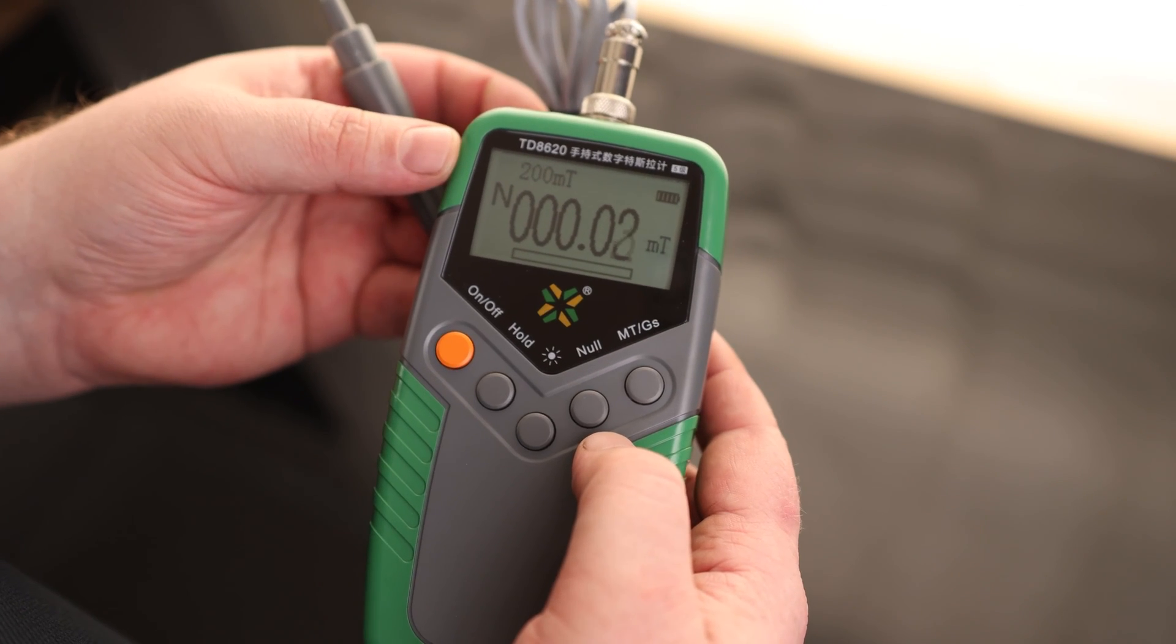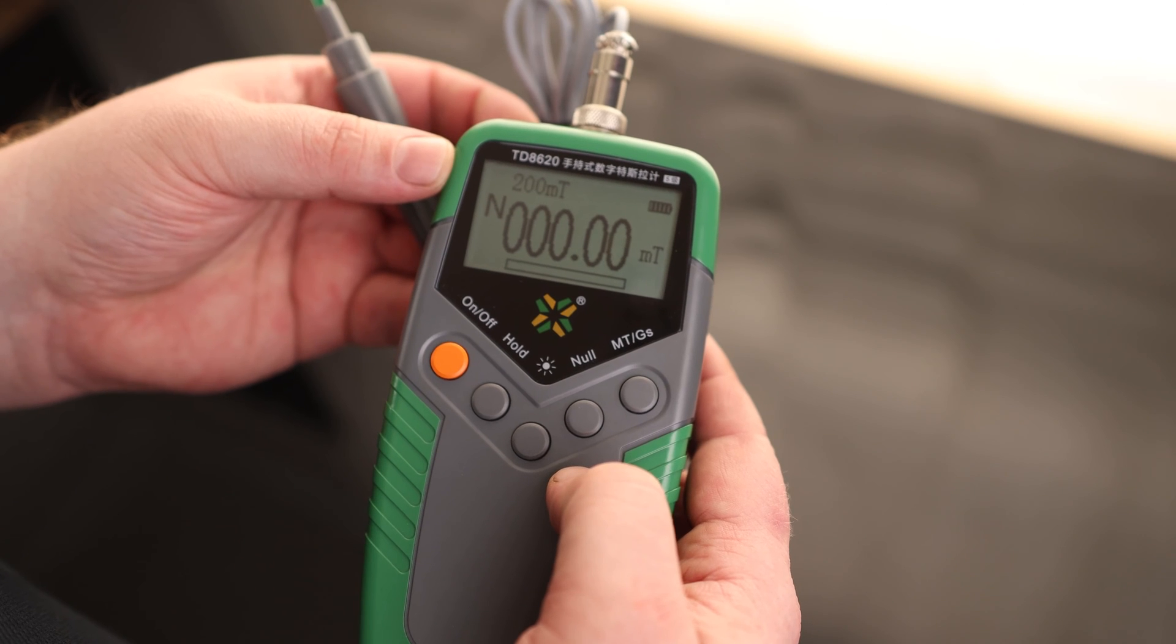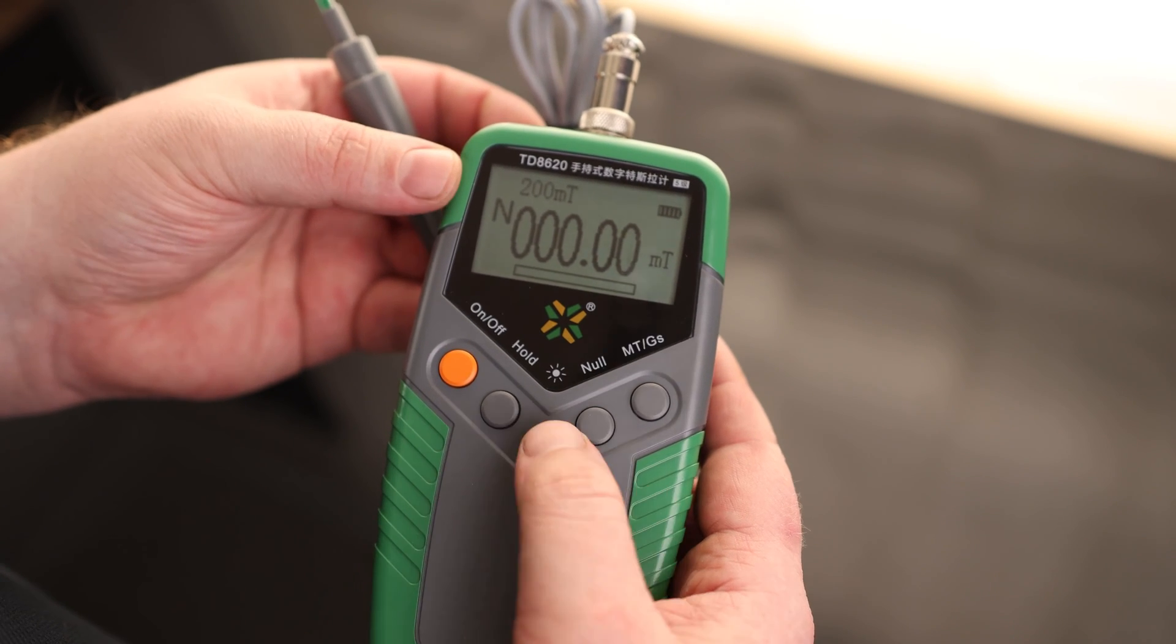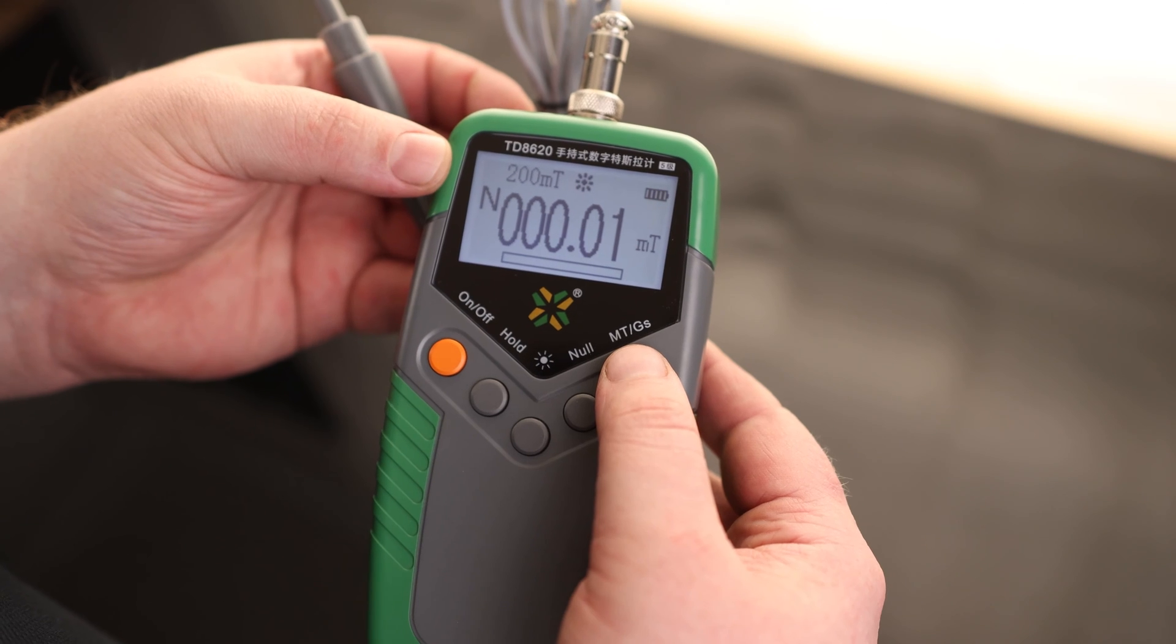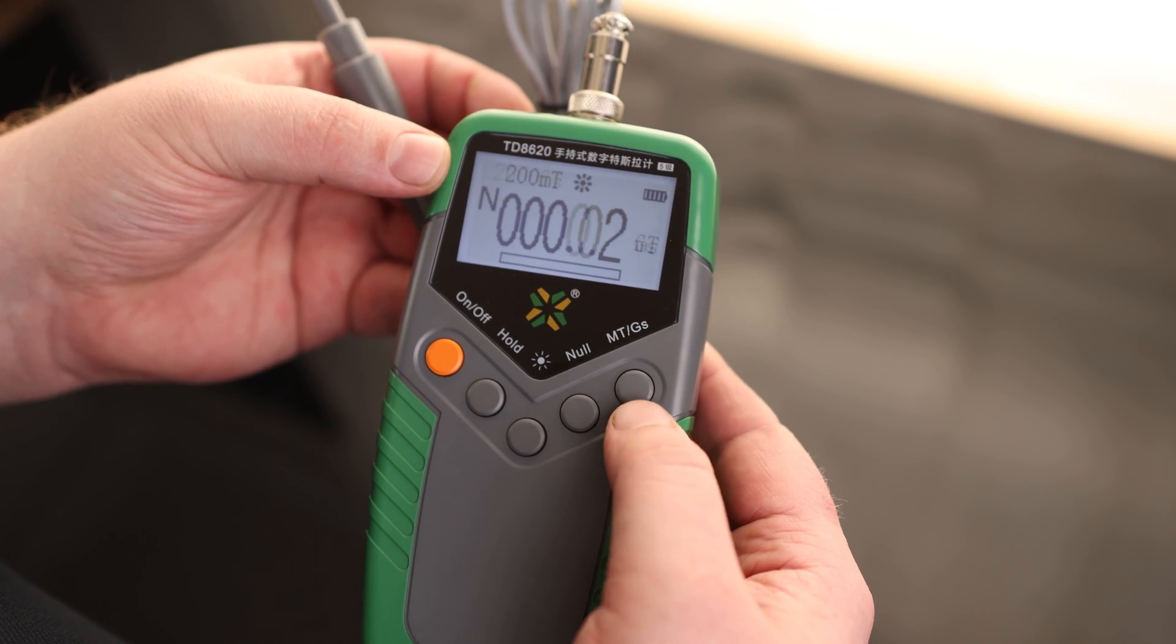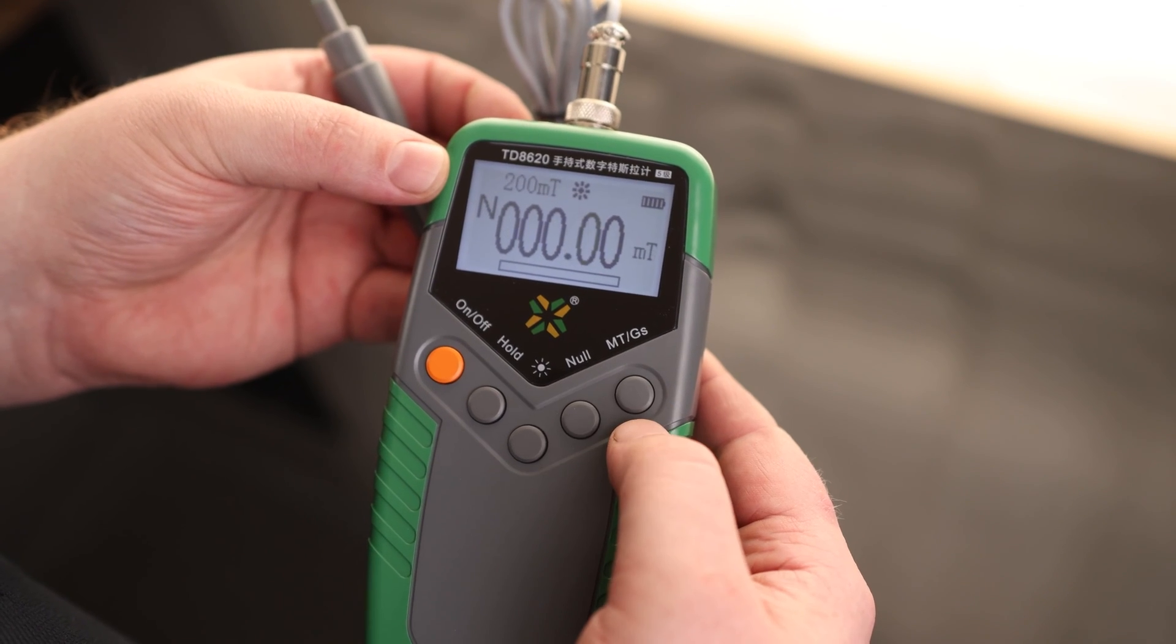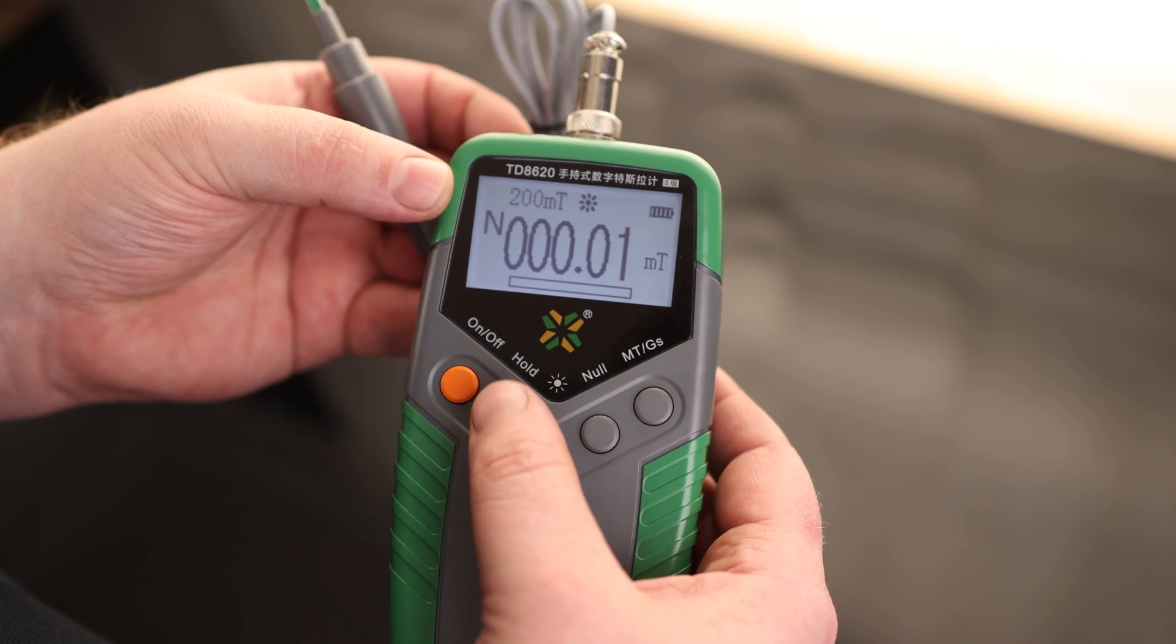But at any rate, if this did not read zero, we just hit null. That's essentially the same as going to clear or zeroing it. Looks like we got a backlight. That's nice. And here we can decide if we want to do milliteslas or Gauss. So there's Gauss, there's milliteslas. We also have a hold function.